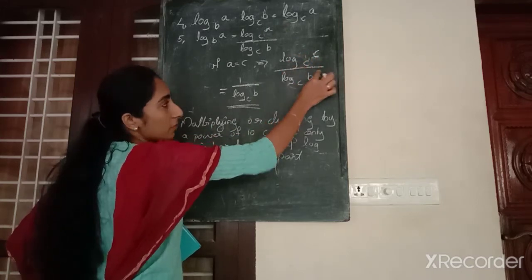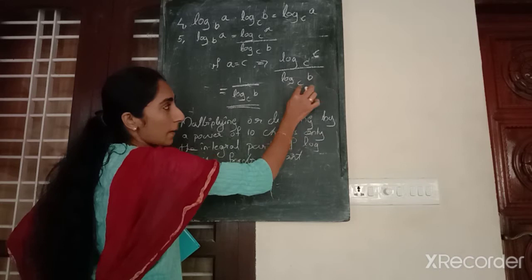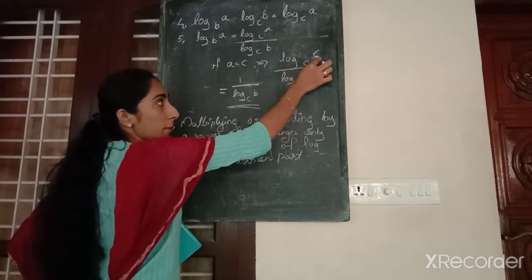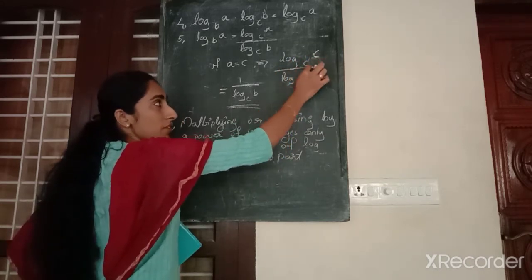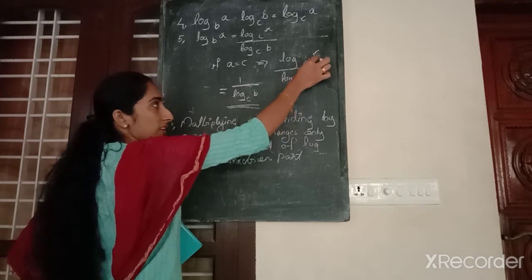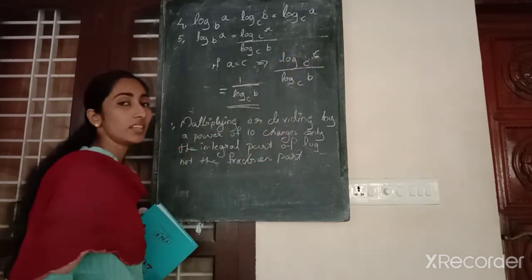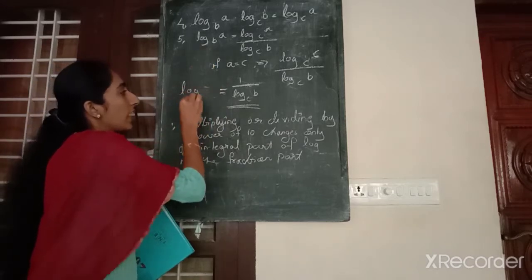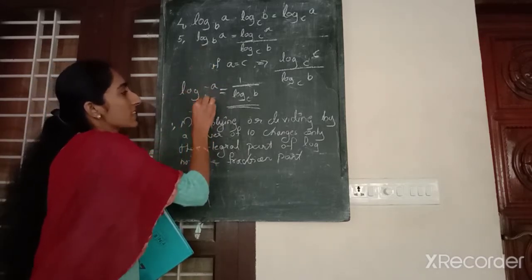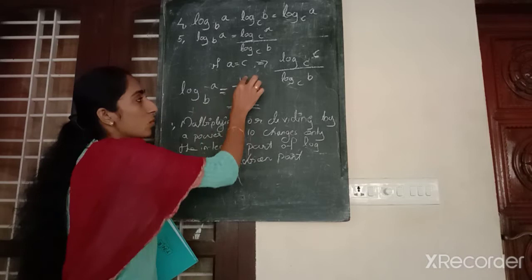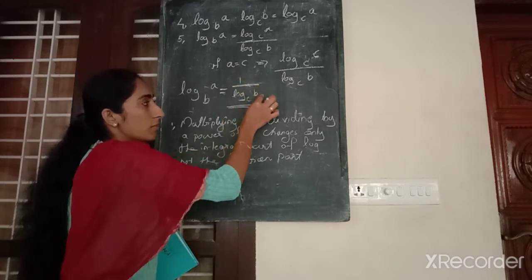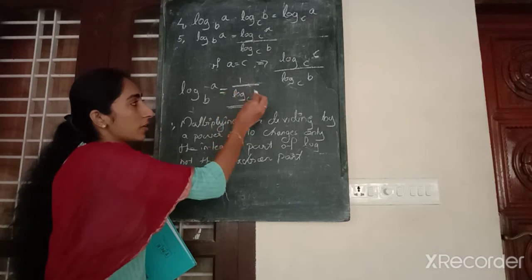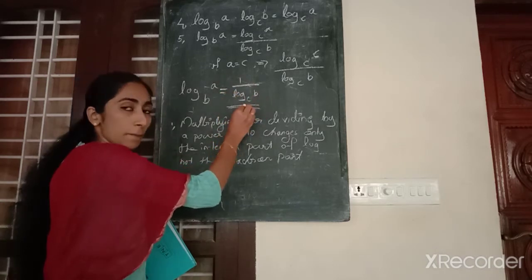Divided by logarithm of B base C — logarithm of a number to a same base gives the same value. So we have logarithm of A base B equals 1 by logarithm of B base C. Clear out: 1 by logarithm of B base C.